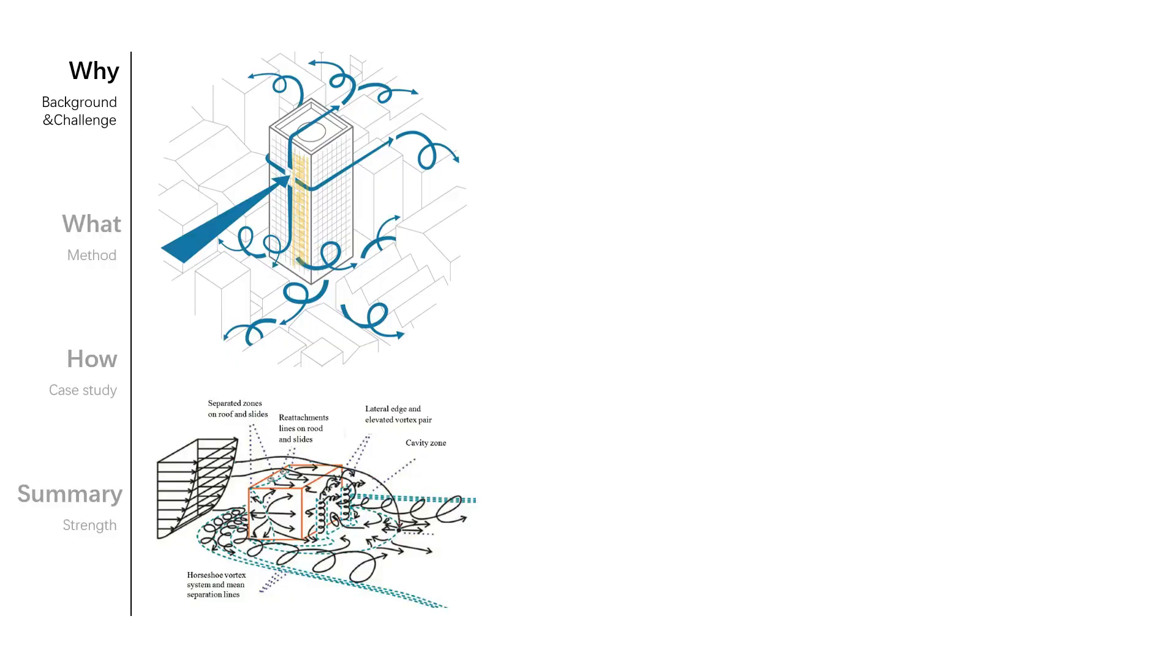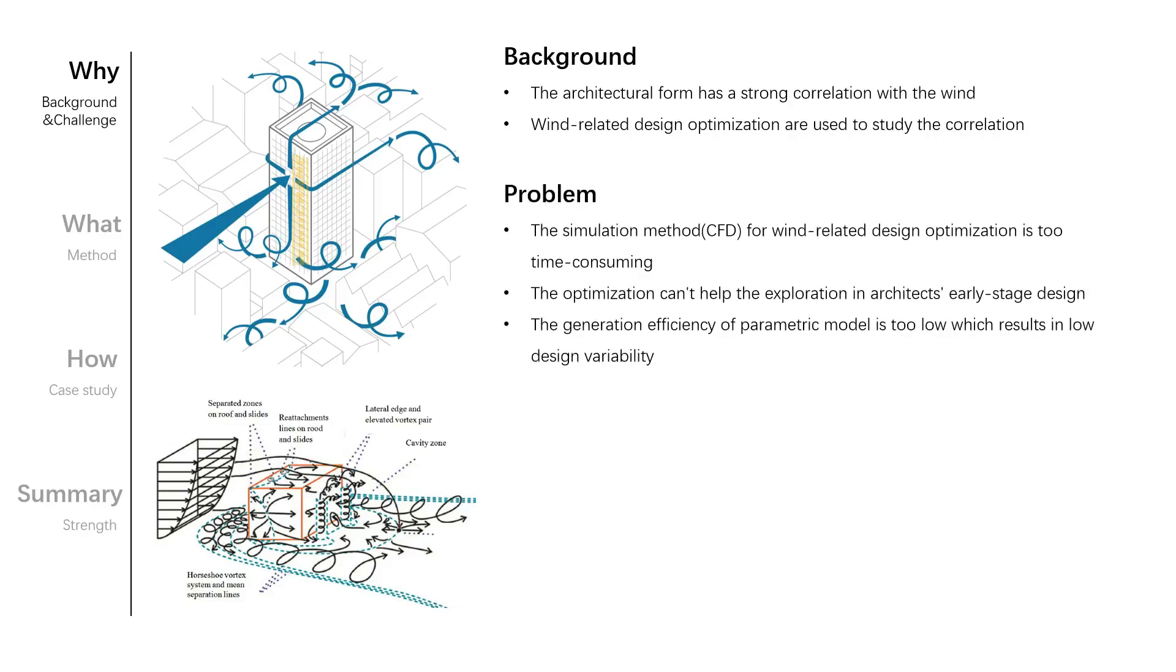First, come to the question why I did this research. This is because the architectural form has a strong correlation with the wind. Performance factors such as daylighting and solar irradiation have been widely investigated, but wind-related factors such as wind pressure and pedestrian wind comfort are relatively rare. So it is very necessary to find the correlation between them. And because of the CFD simulation method, the wind-related design optimization is too time-consuming.